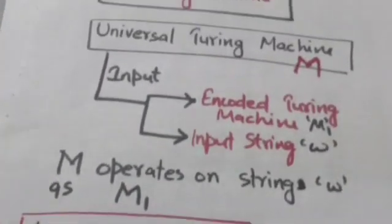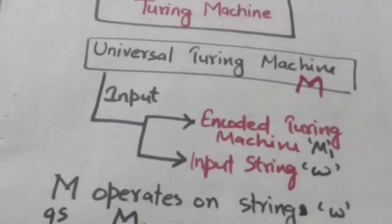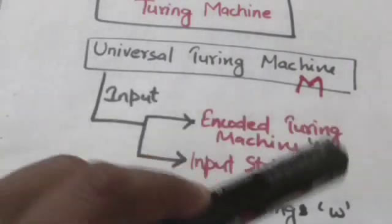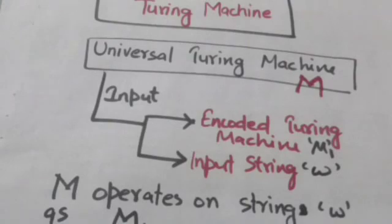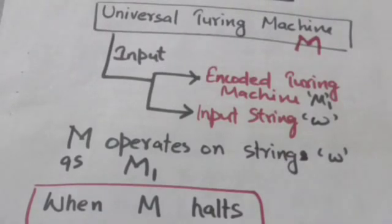Suppose M be the Universal Turing machine and inputs of M are encoded Turing machine M1 and an input string W. M will operate on a string W as M1.